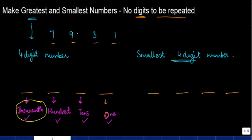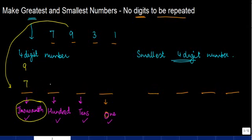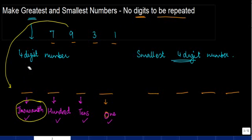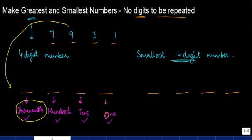So if I have to take one of these digits and put it in the thousands place, I will pick up the largest digit. Why? Because if I put seven here versus putting nine here, the number I get will be seven thousand something versus nine thousand something. So I pick up the largest digit and put it at the thousands place — that's nine. Now once I've used nine, I can't use it again. Coming to the hundreds place, I'm left with seven, three, and one. The largest of these is seven.